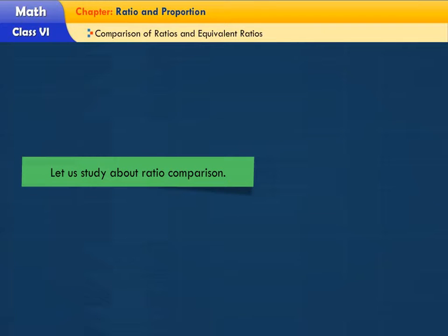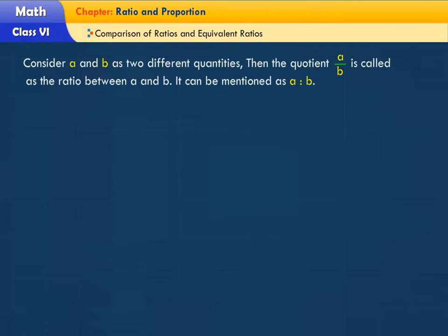Let us study about ratio comparison. Consider A and B as two different quantities. Then the quotient A by B is called as the ratio between A and B. It can be mentioned as A ratio B.